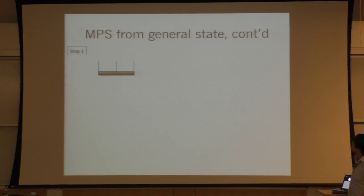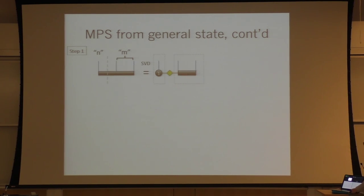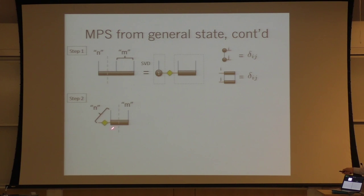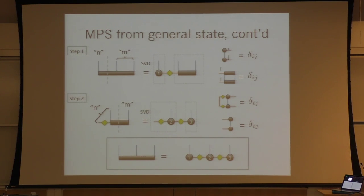For a general three-site state, you do a sequence of SVDs. First, cut between site one and sites two-three, pull out site one by SVD, inserting singular values. Then site two and site three are still stuck together, so treat the bond-plus-site-two as the left part and site three as the right part, do another SVD, and insert more singular values. When you put it all together, you have your matrix product state decomposition: first tensor, second tensor, third tensor. You can do this for any number of sites.